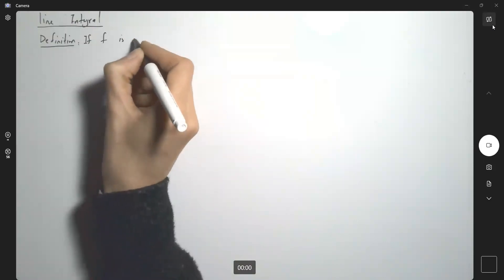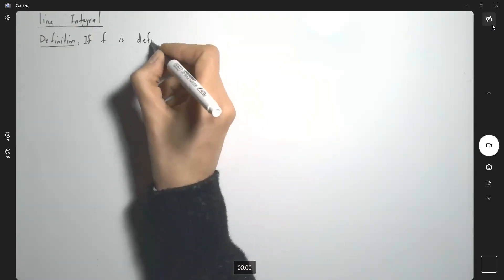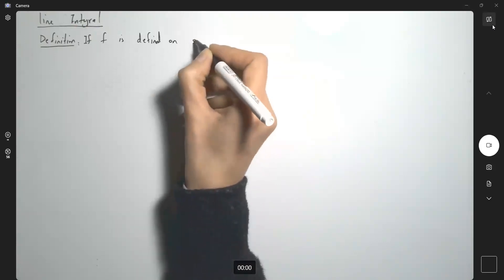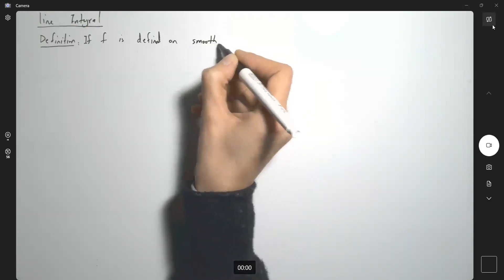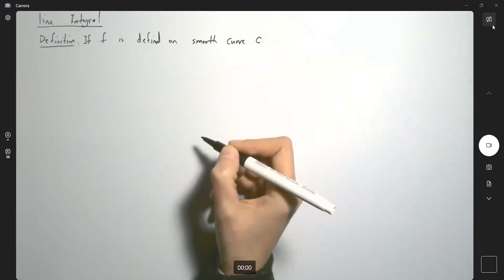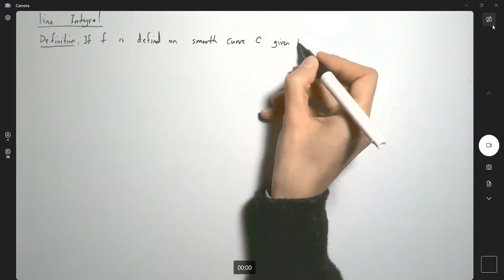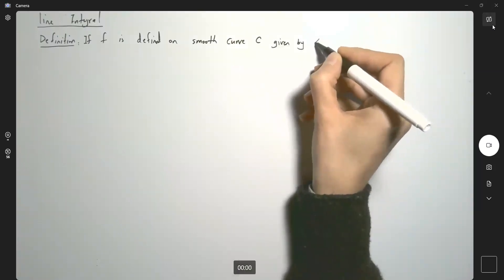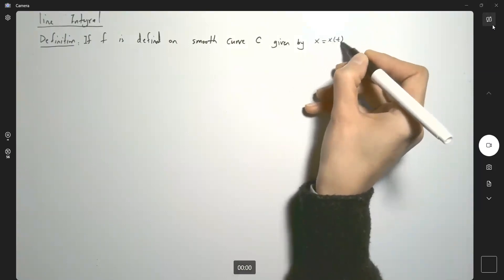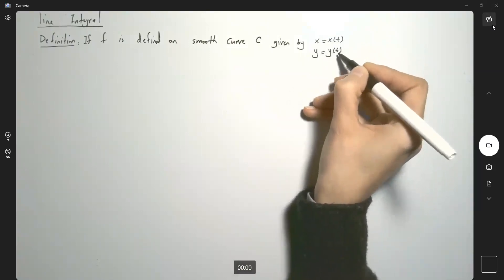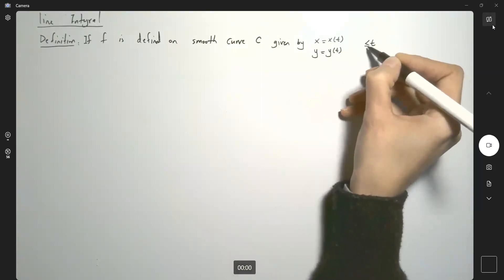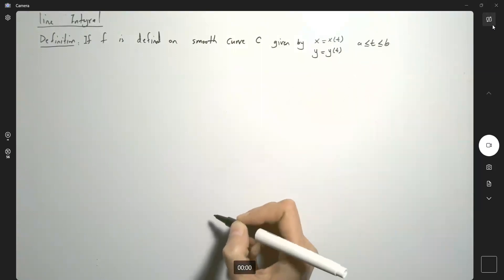If F is defined on a smooth curve like C given by x equals x(t) and y equals y(t), where t belongs to a closed interval a to b.